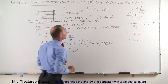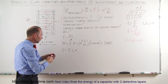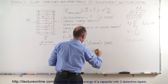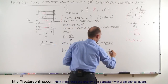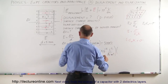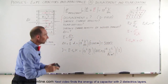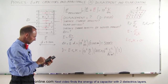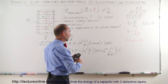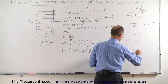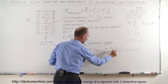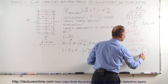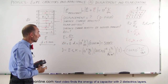The electric field is 10 to the 6th newtons per coulomb, multiplied by epsilon sub nought which is 8.85 times 10 to the minus 12 coulombs squared per newton meter squared, multiplied by the dielectric constant of 3. Calculating: 10⁶ times 8.85×10⁻¹² times 3 equals 2.66 times 10 to the minus 5 coulombs per meter squared. The units of displacement are charge per unit area, the same units as surface charge density.